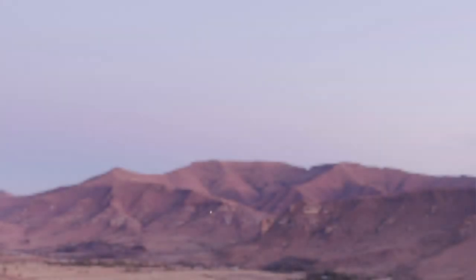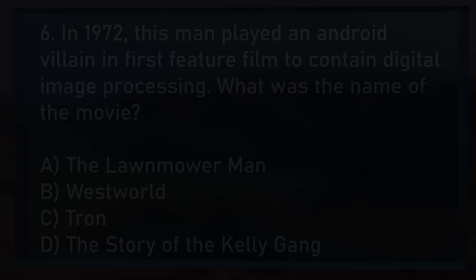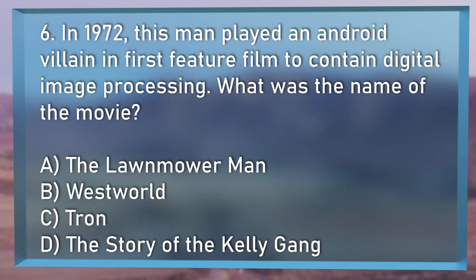Question number 6, the final question of round 2: In 1972, a man played an android villain in the first feature film to contain digital image processing. What was the name of the movie? Was it A, Lawnmower Man; B, Westworld; C, Tron; or D, The Story of the Kelly Gang?